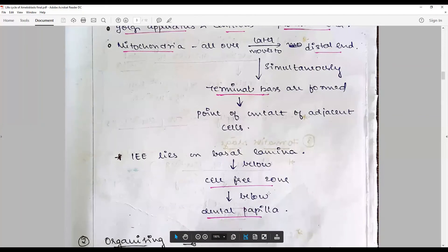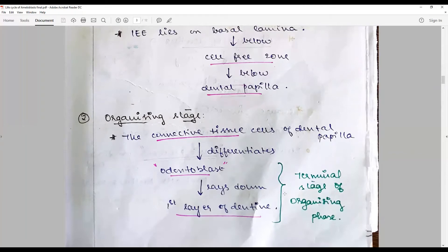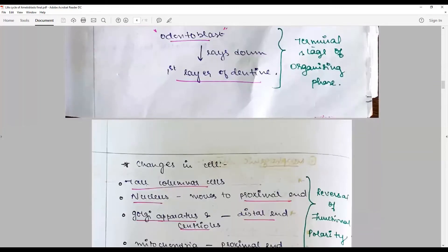At this point, inner enamel epithelium lies on the basal lamina, and below is a cell-free zone and the dental papilla. At the organizing stage, the inner enamel epithelium starts to organize itself and creates an organizing influence by means of bone morphogenetic proteins, fibroblast growth factors, and other cell signaling proteins. This induces the outermost layer of dental papilla to differentiate into the odontoblast, and this lays down the first layer of dentin.